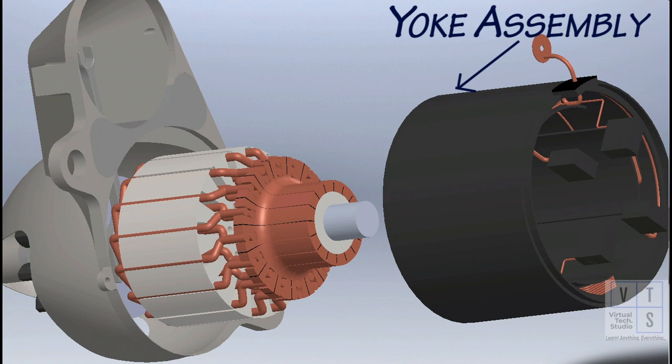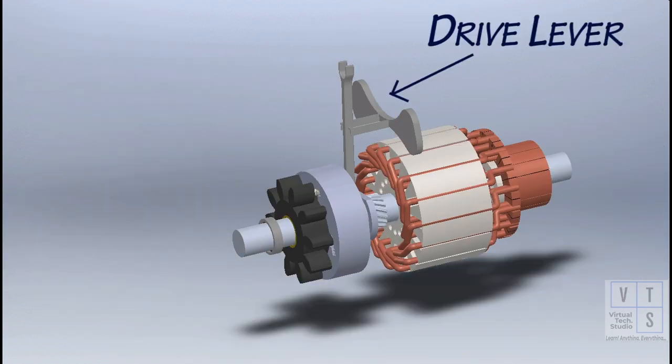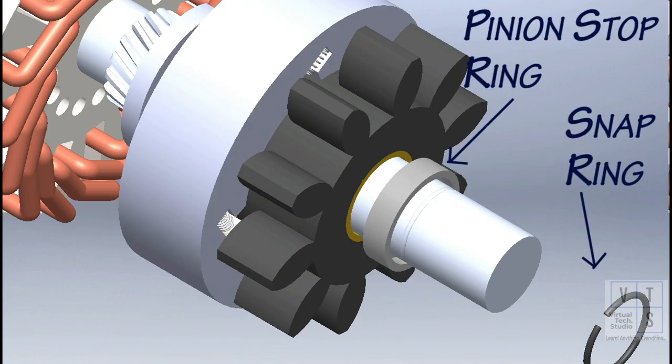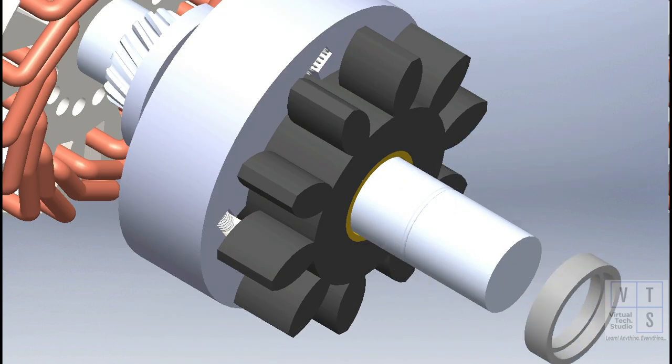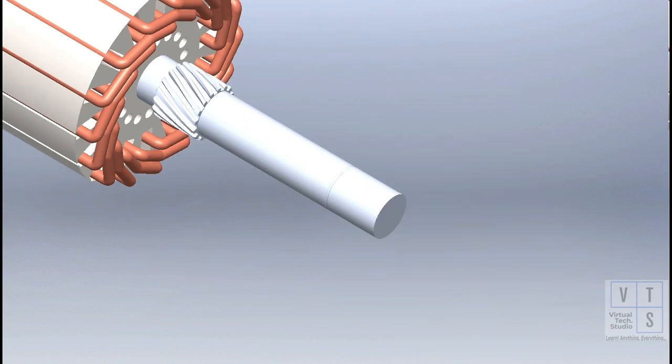Now yoke assembly having stator coils can be removed. Pull out the front drive housing and then the drive lever. Draw pinion stop ring toward overrunning clutch side and remove snap ring. Then pull out the pinion stop ring. Pull out the overrunning clutch assembly from the armature.